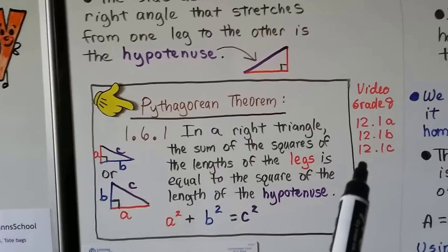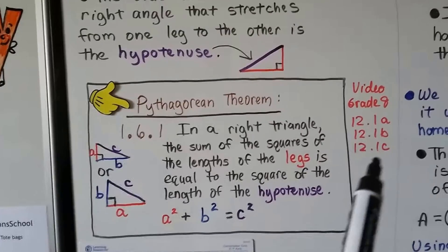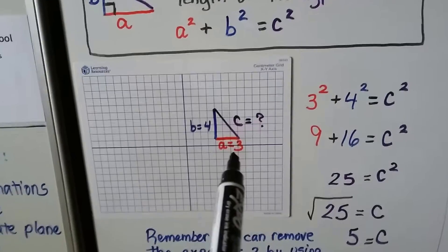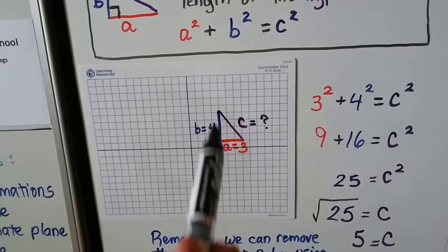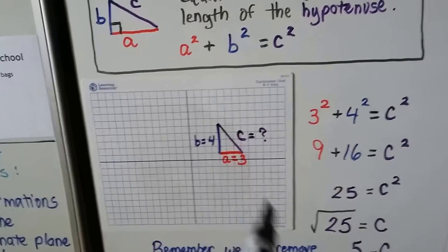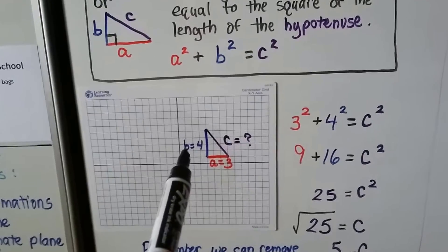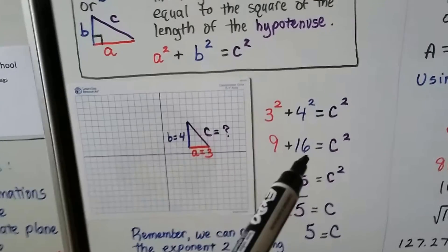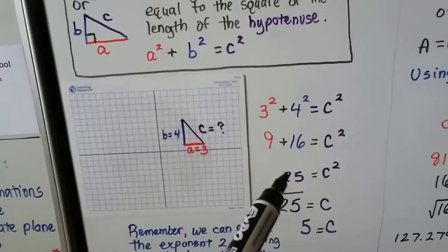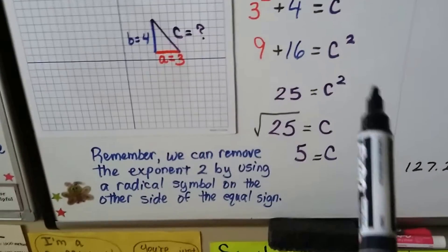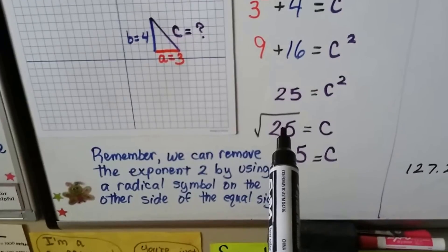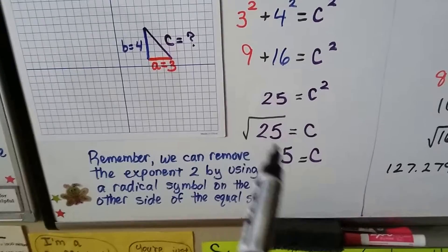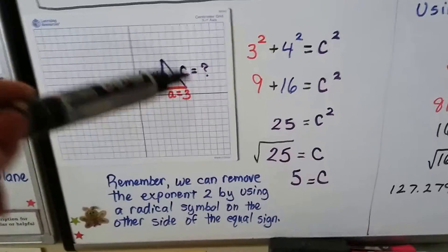You can watch Grade 8 videos 12.1a, 12.1b, and 12.1c to see more about this. Here, a is 3 units across and b is 4 units tall; we need to find c. So 3² + 4² = c², giving us 9 + 16 = 25 = c². Taking the square root: √25 = 5, so c = 5. The length of the hypotenuse is 5.